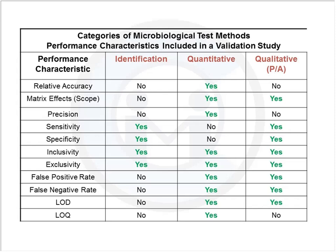We always qualify a result by calling it a colony forming unit, because microorganisms tend to clump and a colony is not necessarily formed by a single cell but could be formed by a clump of cells. Recovery is also reflective of how well the samples have been prepared, so the term 'relative accuracy' applies. For qualitative methods: matrix effects apply, precision does not — there is no repeatability or reproducibility — but sensitivity, specificity, inclusivity, exclusivity, false positive/negative rates, and limit of detection do apply.